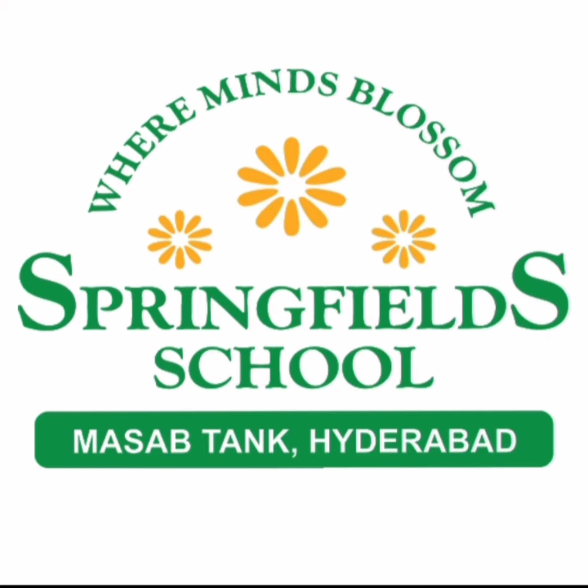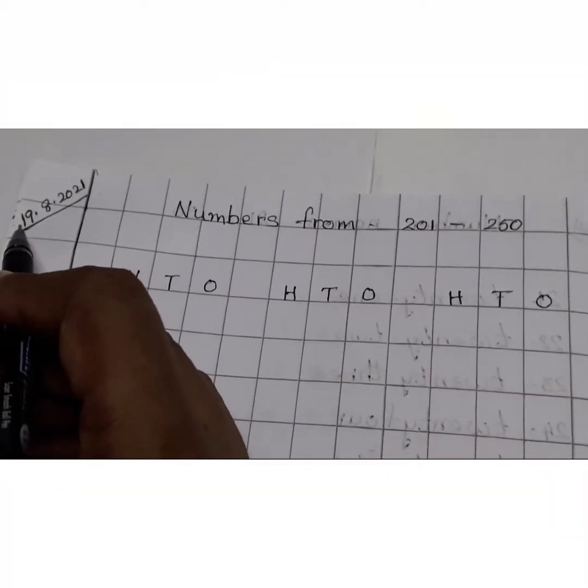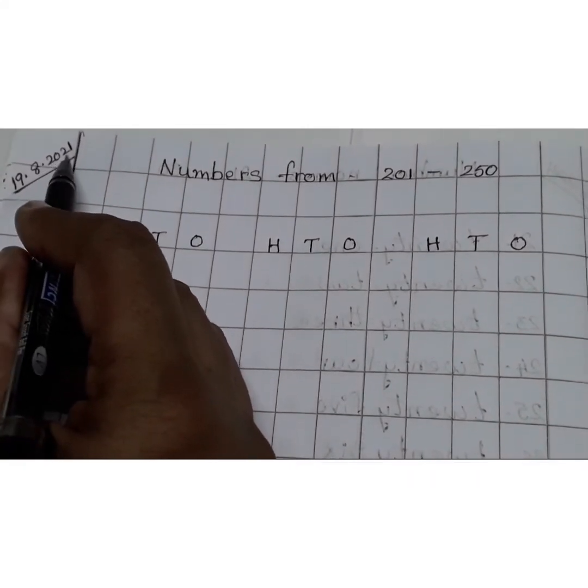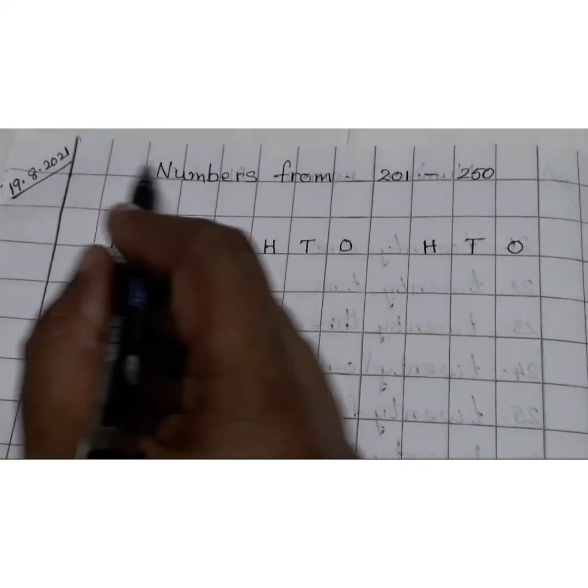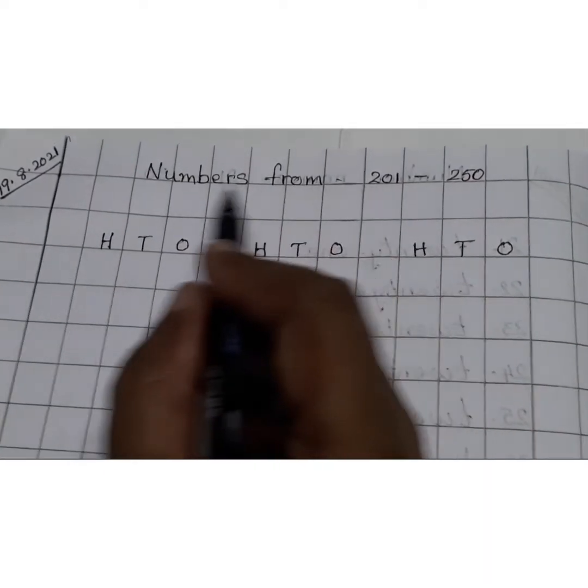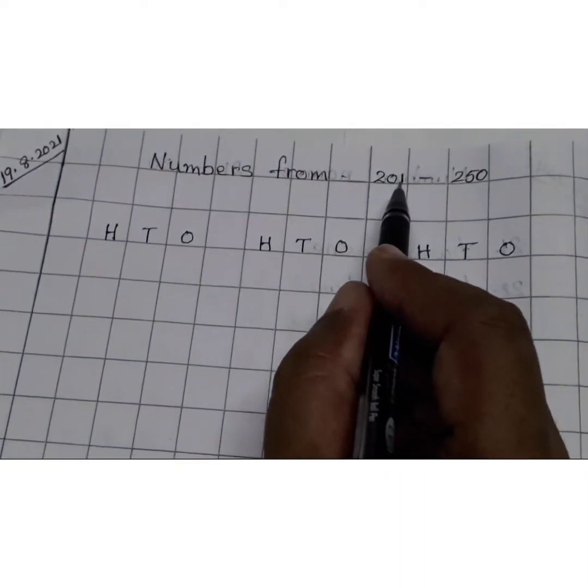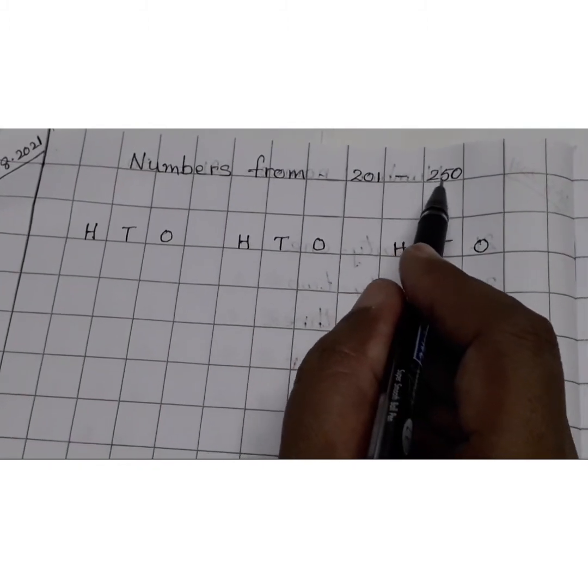Open your classwork books children. Write today's date. 19-8-2021. Write the heading children. Numbers from 201 to 250.